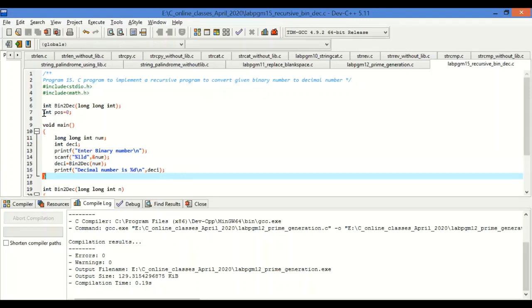Again here I have taken a global declaration position as 0 because when I have to convert, I have to convert a binary number with the 2 powers: 2 to the power 0, 2 to the power 1, 2 to the power 2. So I have taken that position as 0. This will work as the power of 2 holder.